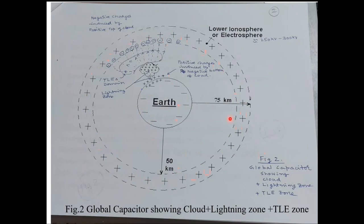Earth is the negative electrode and the lower ionosphere is the positive electrode of the global capacitor. The cloud is shown here, typically around 2 to 3 kilometres above Earth's surface, up to about 10 to 13 kilometres. Above the cloud, we have the region where transient luminous events occur — the sprites, blue jets, tendrils, and ELFs. Together, cloud charges and ELFs take positive charges to the lower ionosphere.